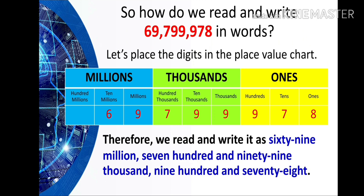So how do we read and write these digits in words? Let's place the digits in the place value chart. Take a look at it again. Therefore, we read and write it as 69,799,978.